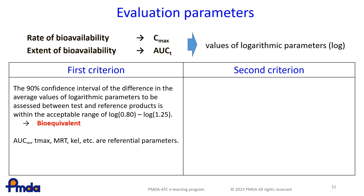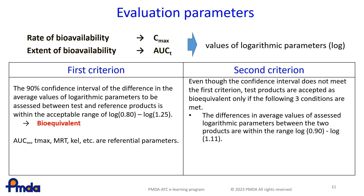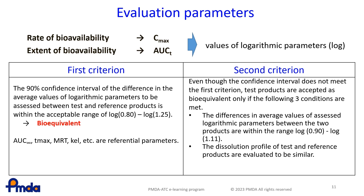Other parameters can be used as supporting information. However, test products are accepted as bioequivalent even if the confidence interval is not in the above range when the following three conditions are satisfied. First, the differences in average values of assessed logarithmic parameters between the two products are within the range log 0.9 to log 1.11. Second, the dissolution profile is evaluated to be similar, or in the case of extended release products, the dissolution profile must be equivalent. And third, the total number of subjects is at least 20.